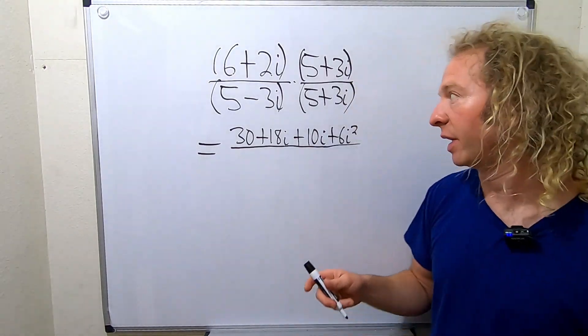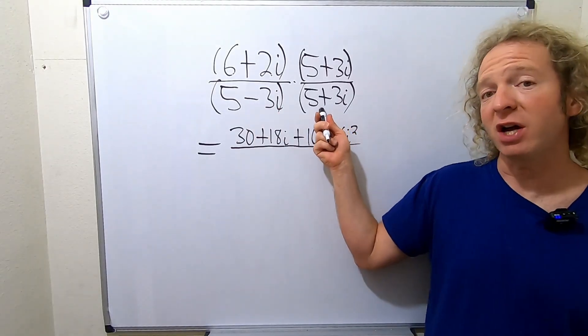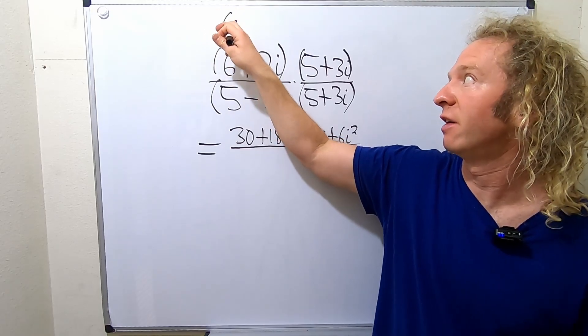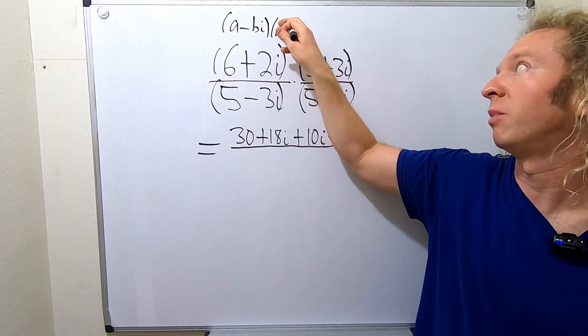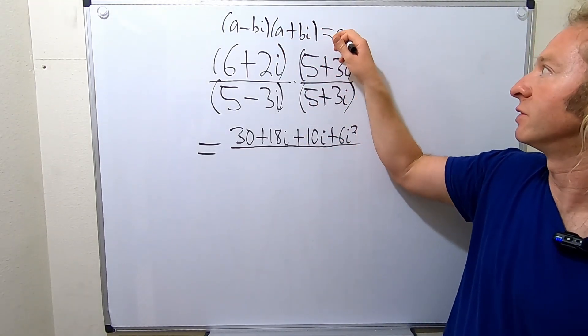All right, in the bottom, there's a trick. So you have a complex number times its conjugate. There's a formula for that. Let me write it up here so you see it. If you have a minus bi times a plus bi, that's going to be equal to a squared minus b squared, like this.